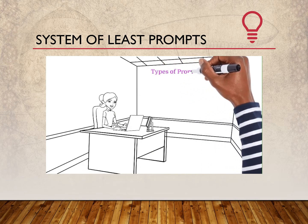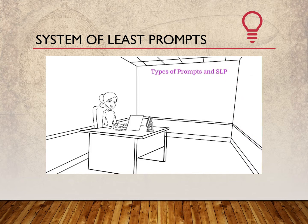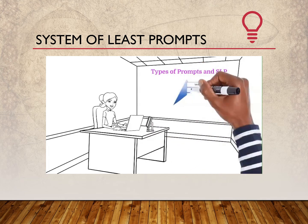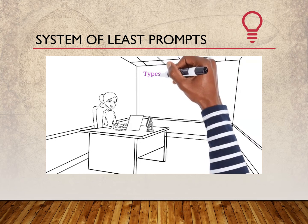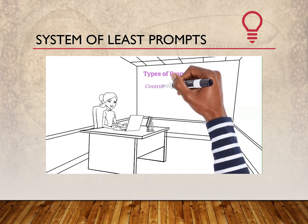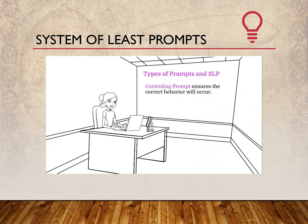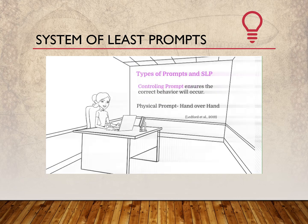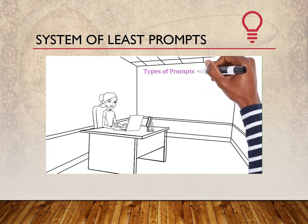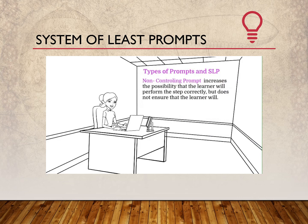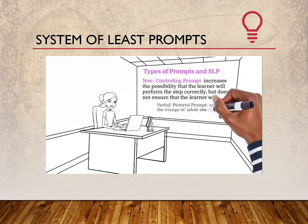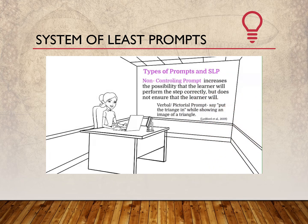That was a great video because it clearly demonstrated the wide variety of prompts you can select when designing instruction using System of Least Prompts. The prompts are categorized based on how much assistance they provide to the learner. Within System of Least Prompts, there are two types of prompts: controlling and non-controlling prompts. A controlling prompt ensures that the learner will perform the step correctly — for example, the physical hand-over-hand prompt we saw in the video. A non-controlling prompt only increases the possibility that the student will perform the step correctly but doesn't ensure it. One very important factor to keep in mind is that a controlling prompt for one learner may not be a controlling prompt for another learner.